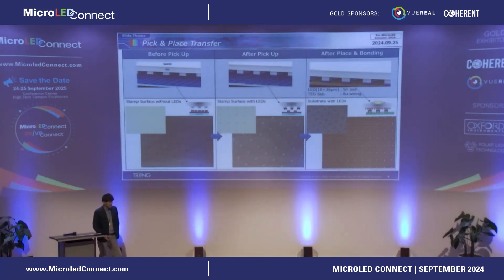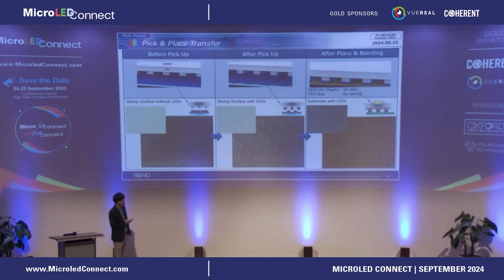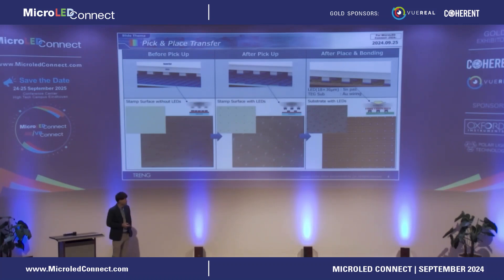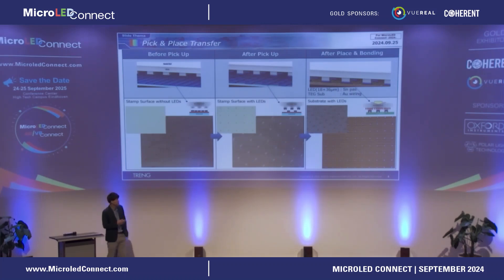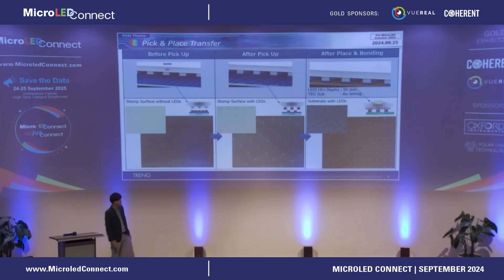This is an actual test experiment of the pick-and-place method. On the left side you can see no LEDs — the surface of the stamp before pickup. In the second picture you can see LEDs on the stamp, meaning after the pickup process. In the last picture you can see the LED lighting on the substrate — after the place and bonding process. So the pick-and-place and bonding process is successful.